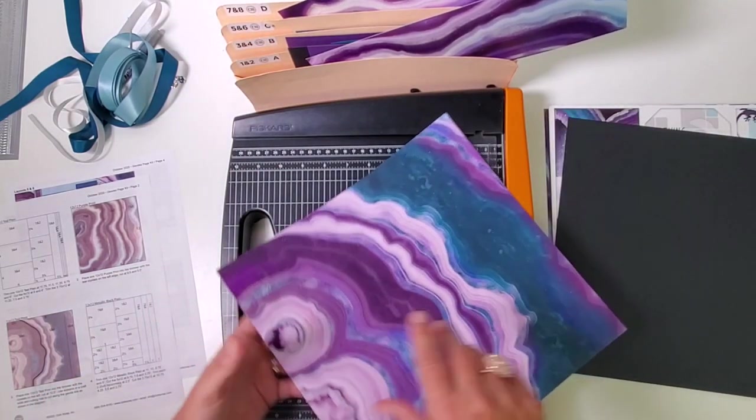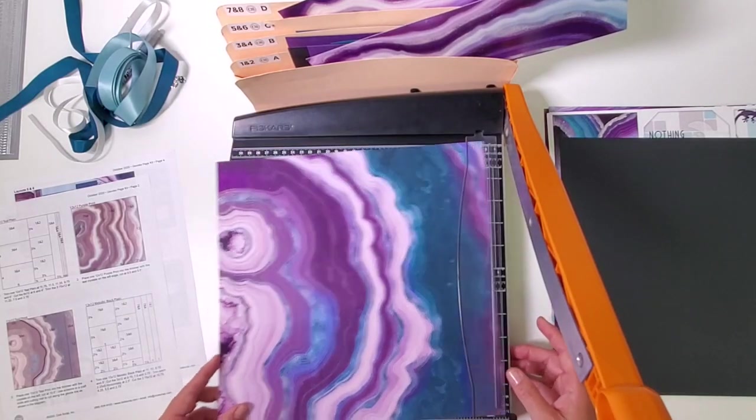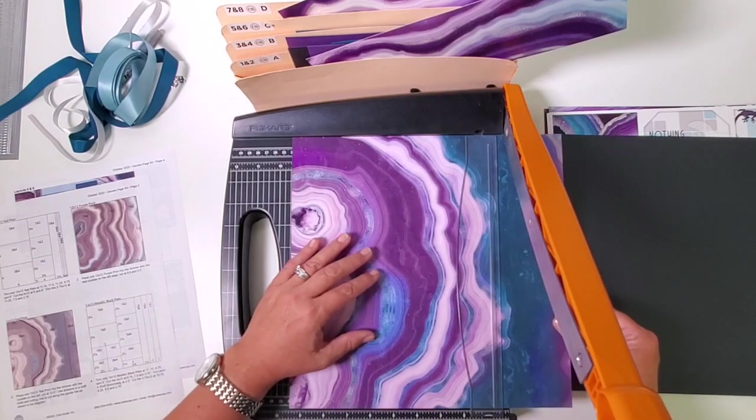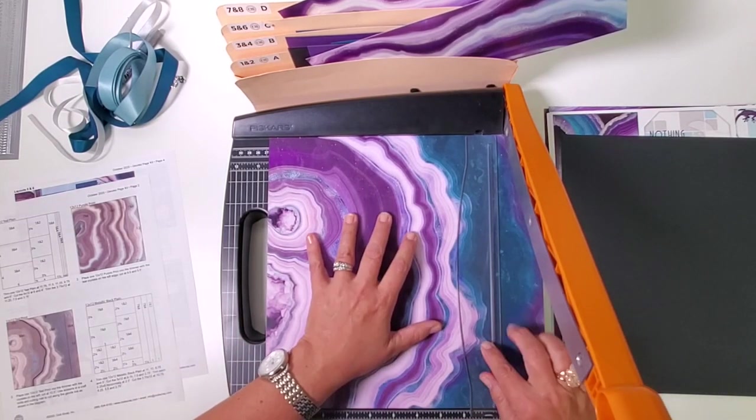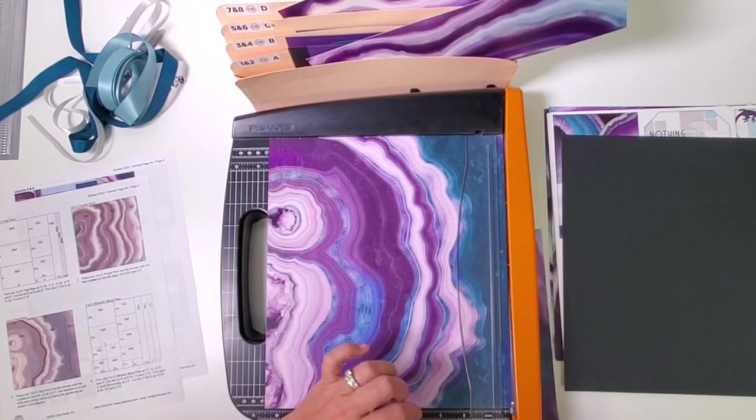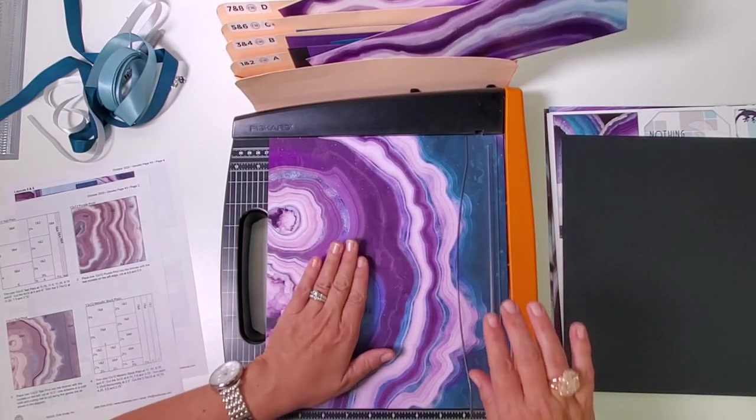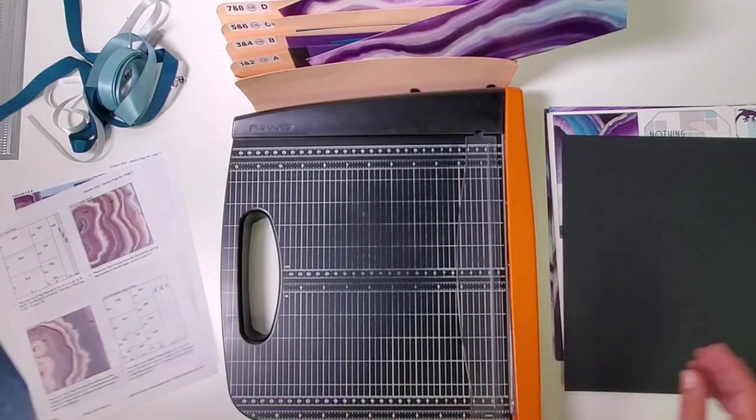Now we'll take this teal print—not steel, teal print—and place it so the crystals are on the left. We're going to cut it at 10 and a half inches. This pretty teal strip goes in pocket three and four. I'm going to set this aside for now and finish the work on it after we're done with our trimmer.